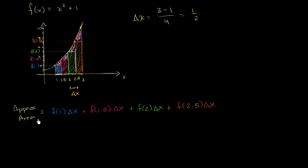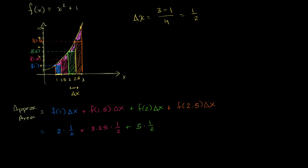Let's evaluate this. f of 1: 1 squared plus 1 equals 2, times one half. f of 1.5: 1.5 squared is 2.25, plus 1 is 3.25, times one half. f of 2: 2 squared plus 1 is 5, times one half. And f of 2.5: 2.5 squared is 6.25, plus 1 is 7.25, times one half.